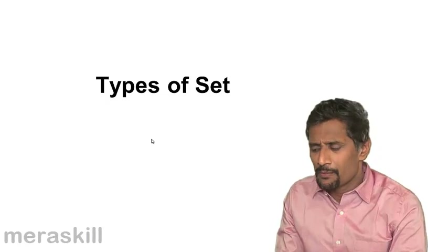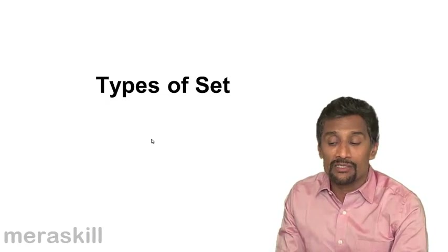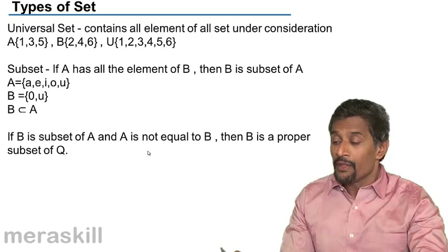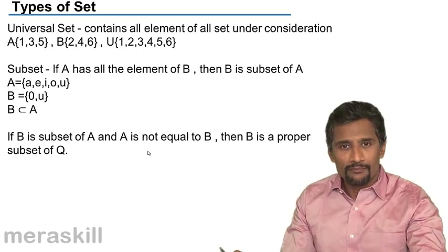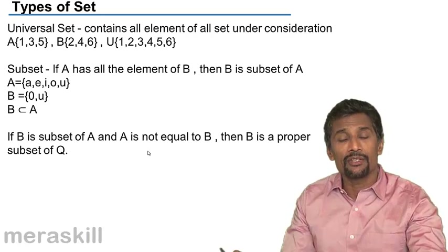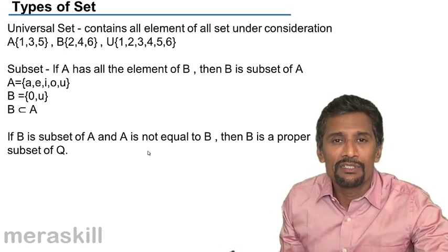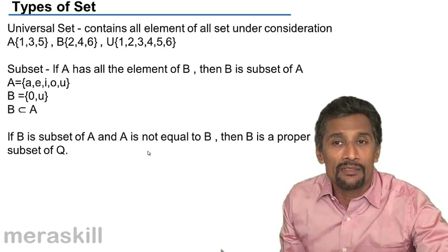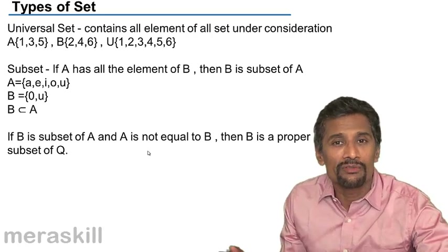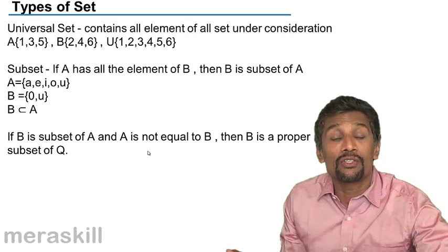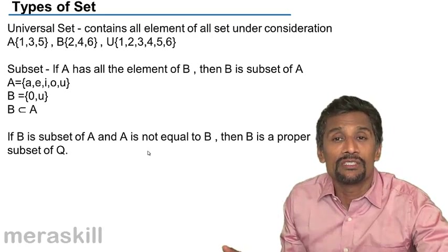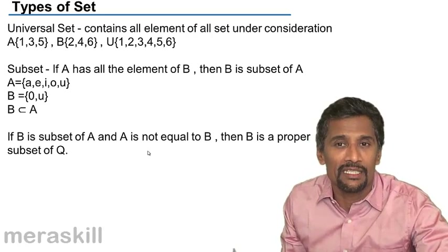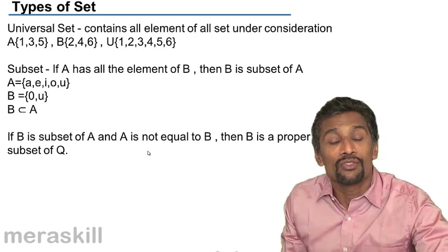We will understand types of sets and the nomenclature associated with sets. We have something called a universal set. Suppose there are three or four sets — say A, B, and C. A universal set is a set which contains all the elements of all three sets. A simple parallel: the set of students in a school is the universal set, while the set of students in standard eight, standard nine, and standard ten are all contained in that big set.